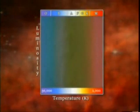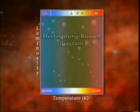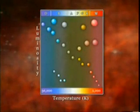Astronomers plot the luminosity of stars versus their temperatures on a graph called the Hertzsprung-Russell diagram. This simple diagram is critically important because it sorts the stars by their diameters.